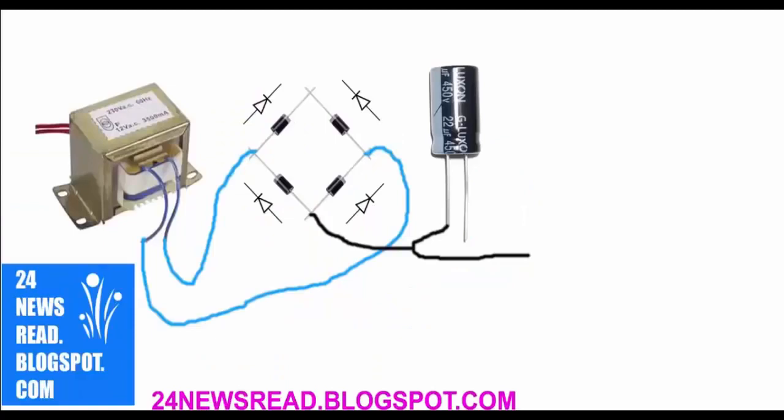Now capacitor minus position join, join plus position, we get 12 volt DC.